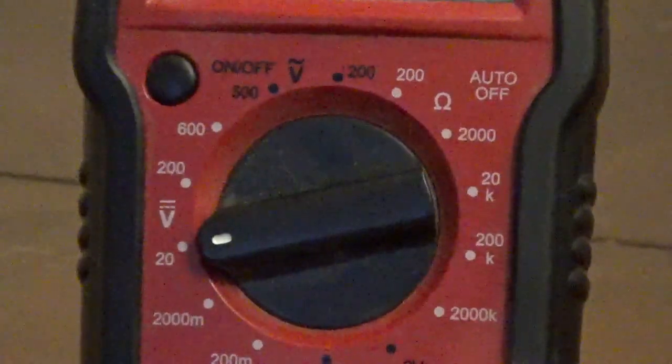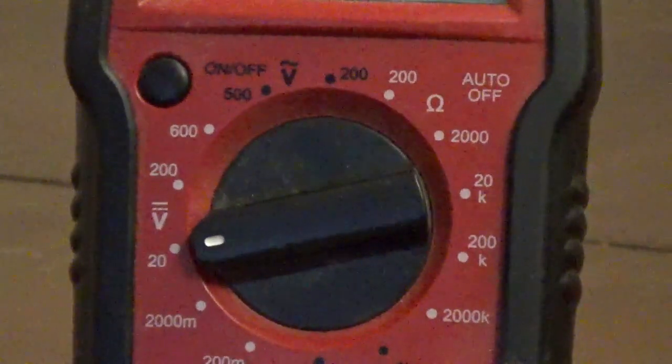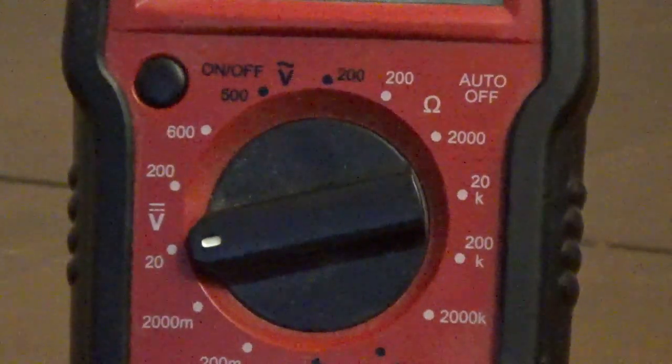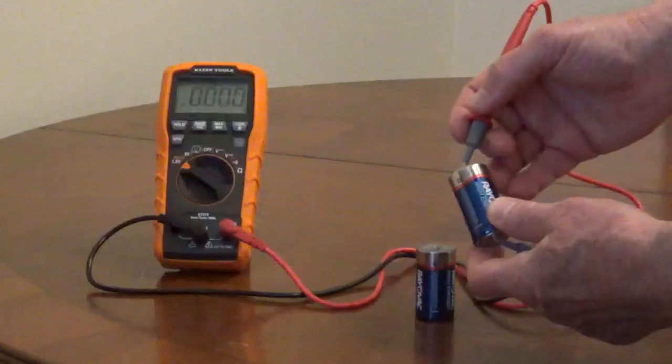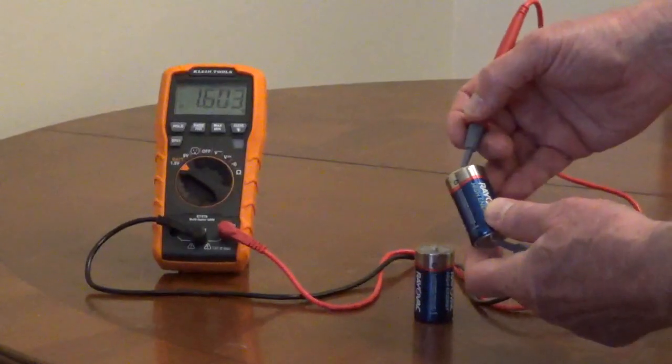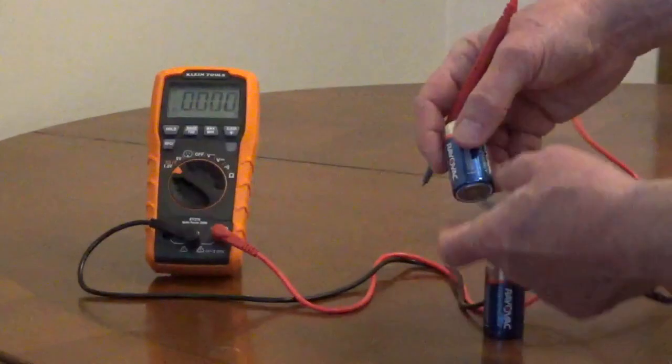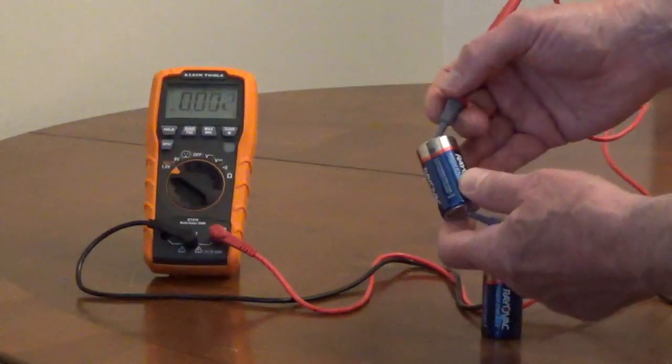For this multimeter, the closest setting just above 1.5 or 9 is 20. Touch the red probe to the positive side of the battery and the black probe to the negative side of the battery to check the voltage.